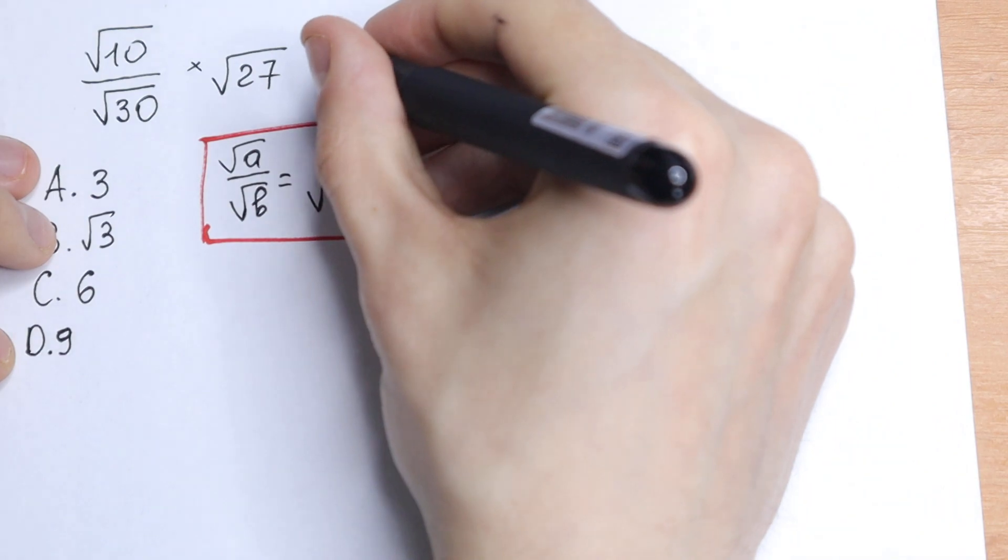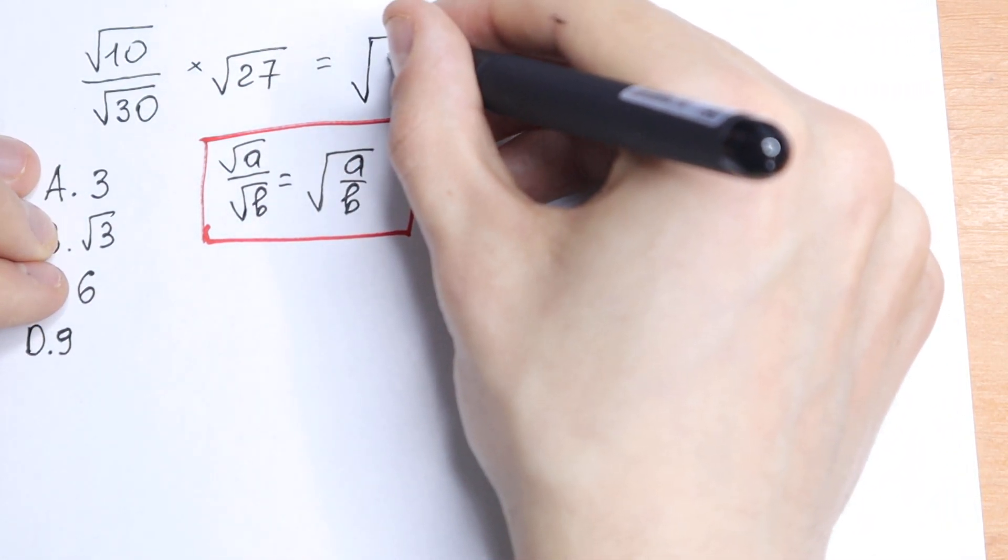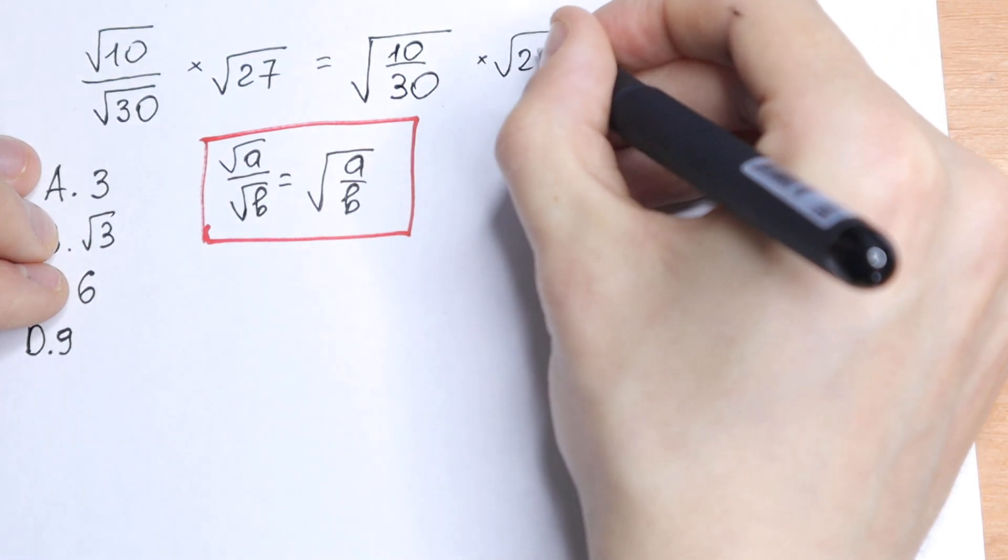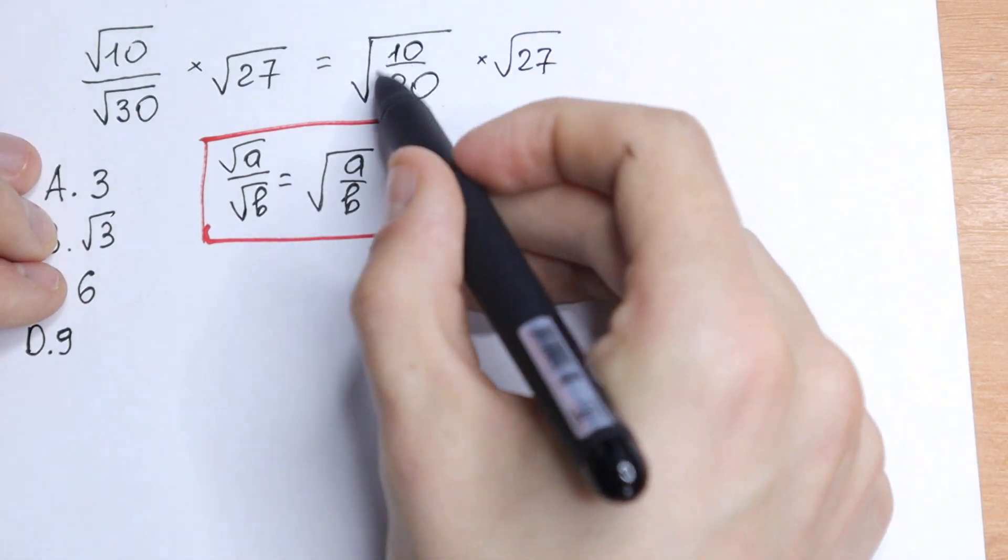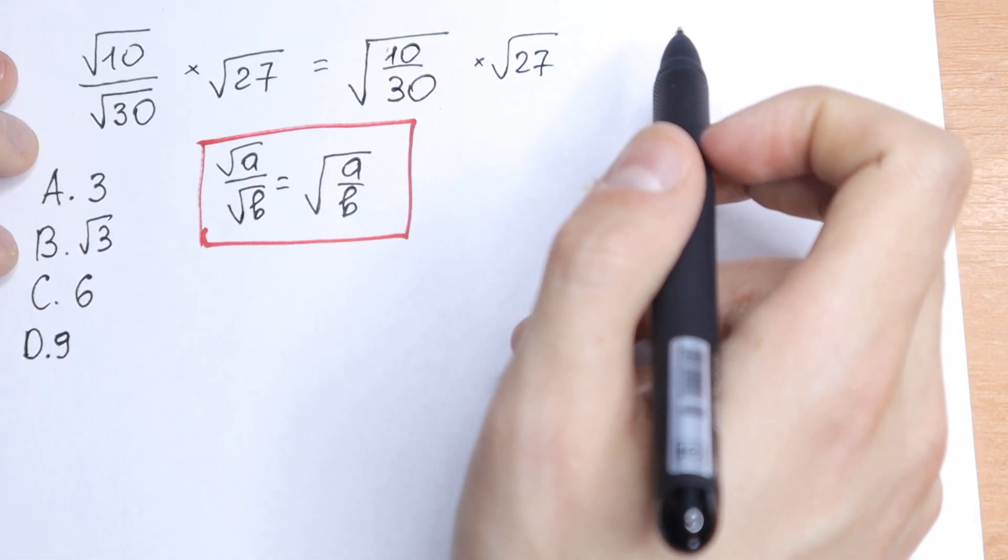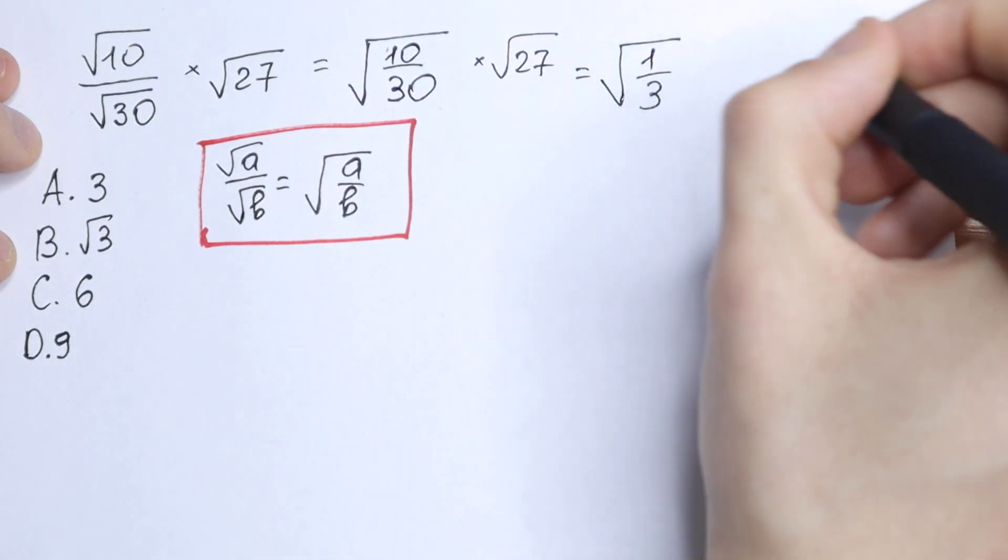So as a result, we'll have square root, and in our square root sign, we will have 10 over 30, times square root of 27. We can easily simplify this. Let's divide numerator and denominator by 10. We will have 1 over 3, so as a result we will have square root of 1 over 3.